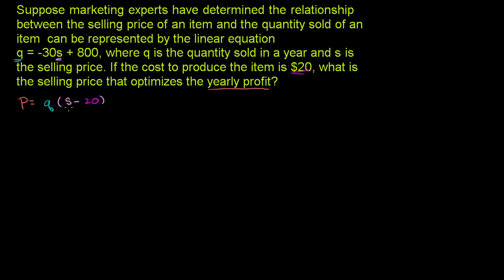That makes sense. If you're selling something for $30 and it costs you $20 to make it, every unit you sell you'll make $10 — $30 minus $20. If you sell two units, it's going to be 2 times $10, so you're going to make $20. Nothing groundbreaking right here.